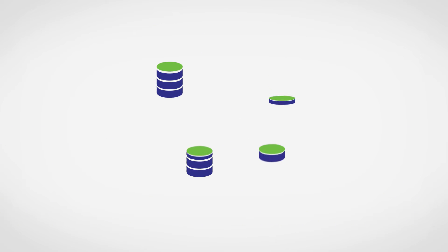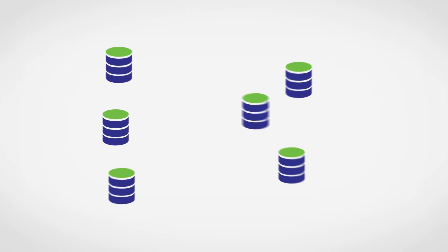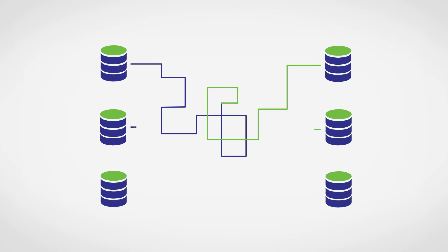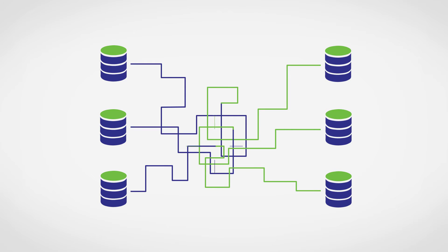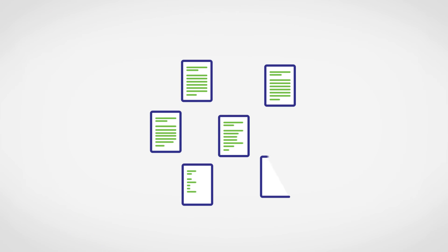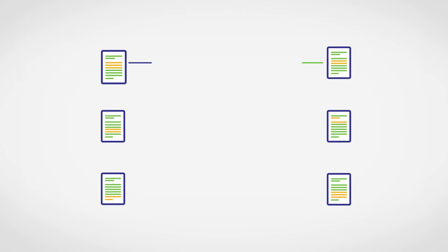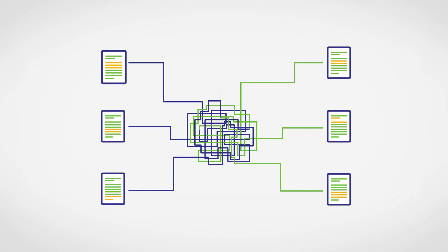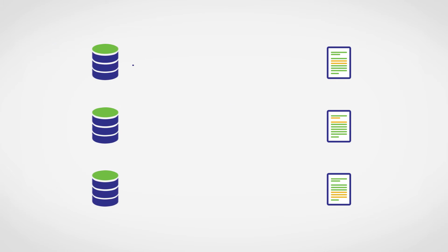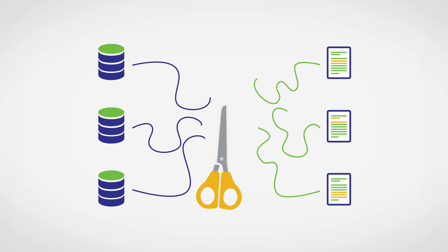Until now, that only worked with structured data. You had to collect it from different distributed and not connected databases and put things together piece by piece. That was already a lot of work, but with text-based documents — so-called unstructured data — this task was of even lower precision and so much more complicated. And the ultimate goal, connecting structured and unstructured data, wasn't even possible until now.